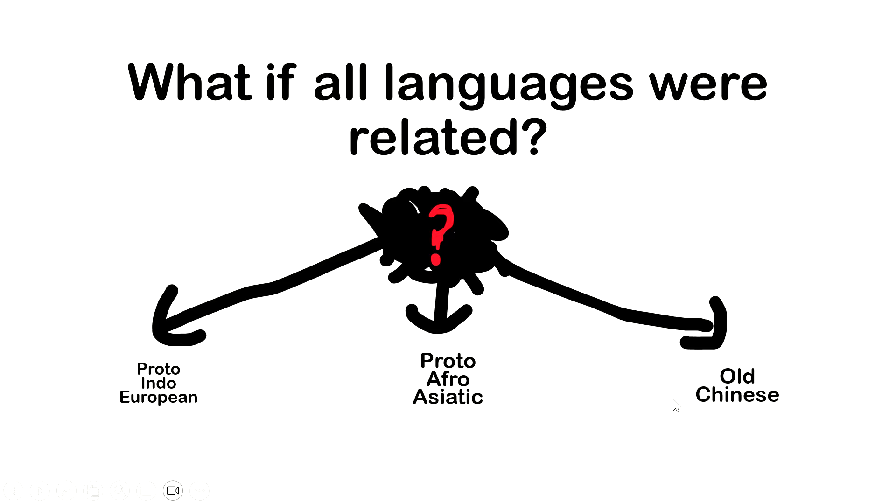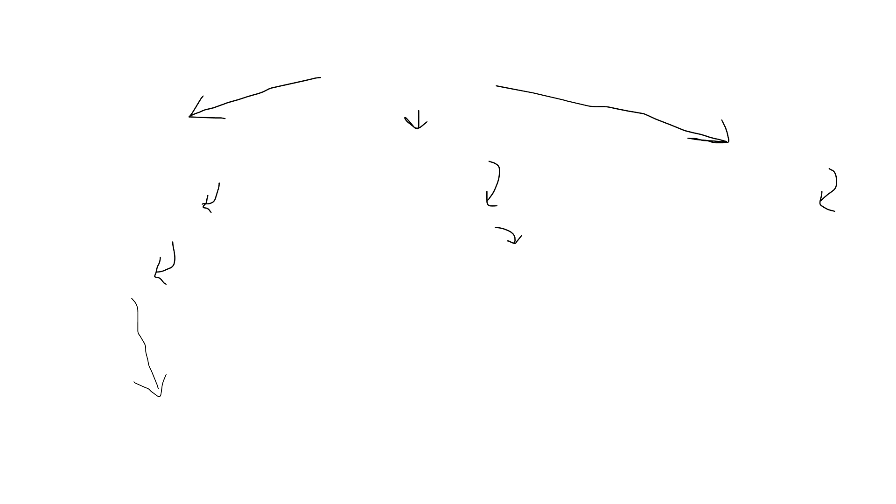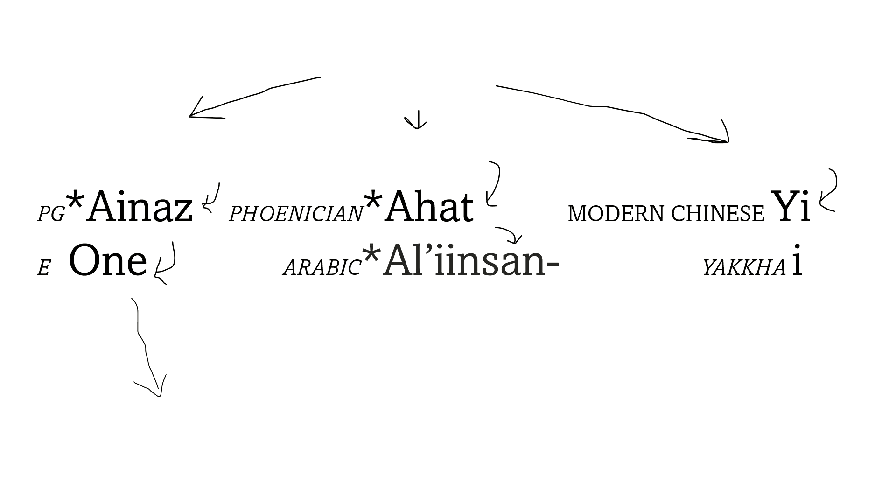So yeah, anyways. First, this is all for number one. All these words are for number one in different languages. One in English obviously comes from Ainaz in Proto-Germanic. There's some stuff in between there, but...